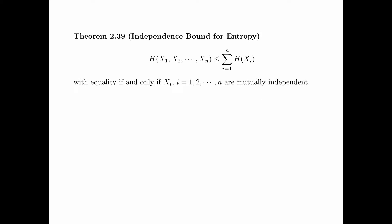Theorem 2.39 is called the independence bound for entropy. It says that the joint entropy of X1, X2, up to Xn is less than or equal to the sum of all the individual entropies, namely the summation for i from 1 up to n of entropy of Xi, with equality if and only if X1 through Xn are mutually independent.